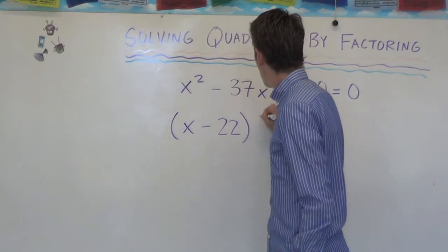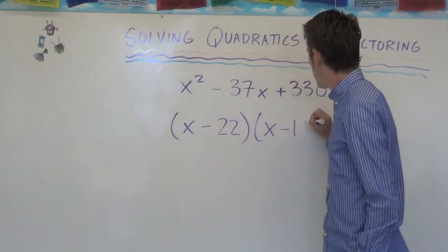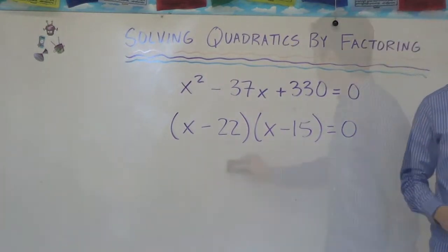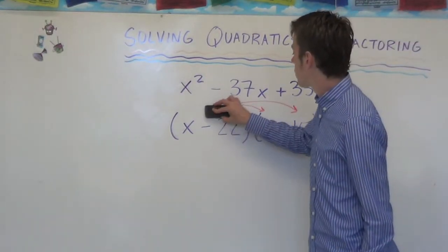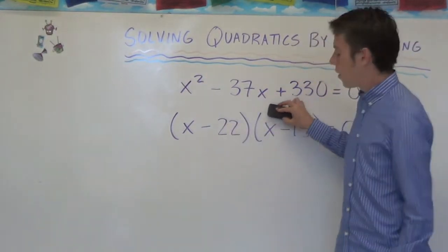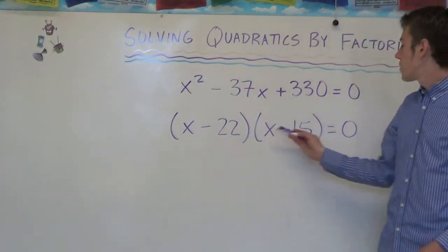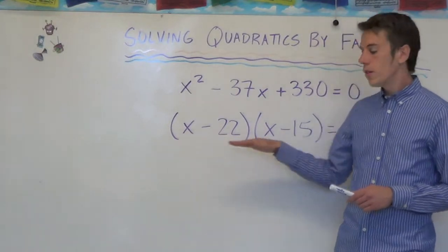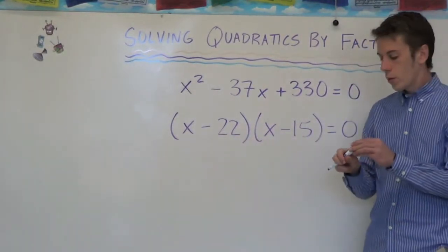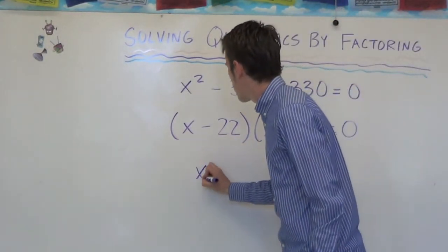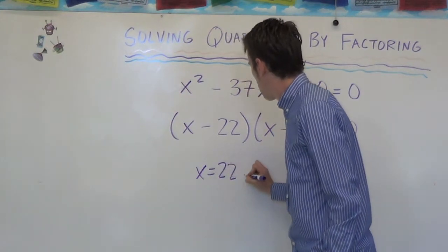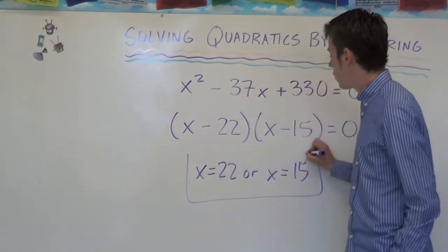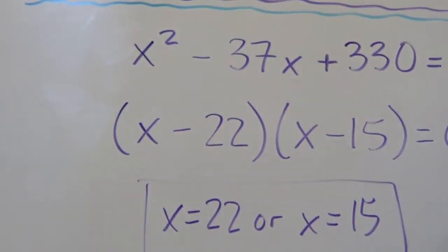So we have (x − 22)(x − 15) = 0. There's only one final step, which is the easiest step once you've got it factored. If the product of two numbers is zero, either this factor has to be zero or this factor has to be zero. Therefore, x has to be 22 or x has to be 15. And those are the two solutions for this quadratic equation.